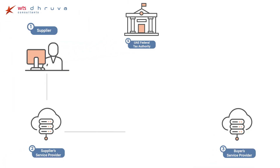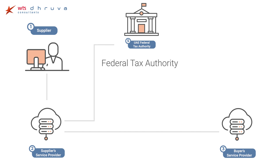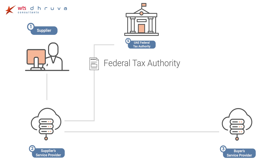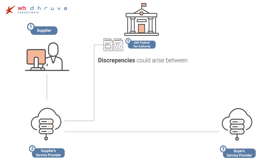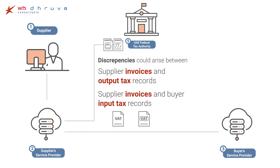Simultaneously, while sharing with the buyer's service provider, the supplier's service provider will also send an extract of relevant invoice data to the UAE Ministry of Finance and Federal Tax Authority. While the service provider handles this, suppliers and buyers alike will need to understand what is being reported and consider discrepancies and delays in reporting, their VAT return, and supplier and buyer VAT returns.